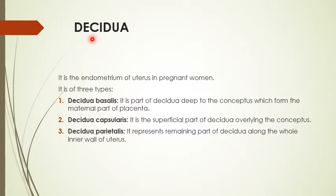If the corpus luteum undergoes atrophy, the decidua is shed in the menstrual cycle in pieces. It is shed because two layers separate: the spongy layer and the compact layer — but not the basal layer along with the myometrium, which persists. So the spongy layer and compact layer are shed, and newly formed endometrial proliferation occurs — this is given the name decidua.